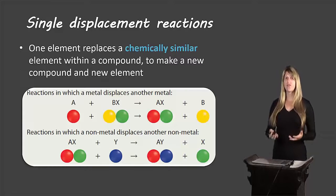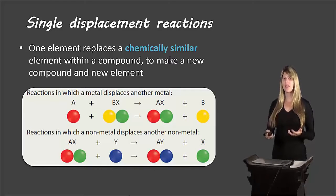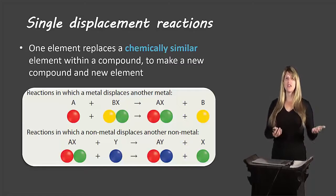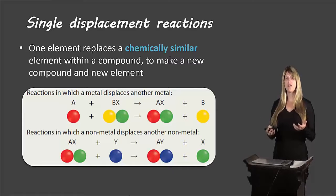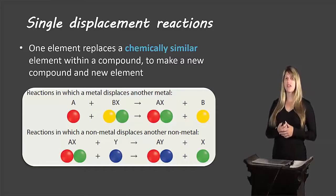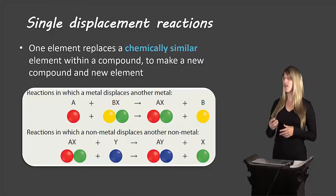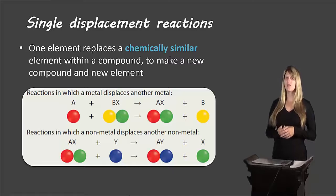Just a review about single displacement reactions: it's when one element replaces a chemically similar element that's in a compound to produce a new compound and a new element by itself. Chemically similar means a metal replacing another metal, or a non-metal replacing another non-metal — a metal cannot replace a non-metal. The picture shows the two main types: a metal displacing another metal, and a non-metal displacing another non-metal.